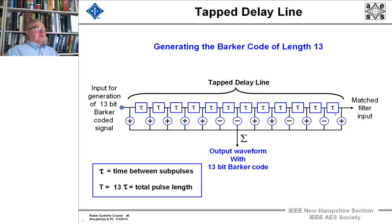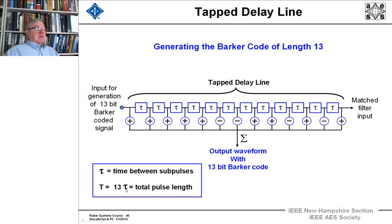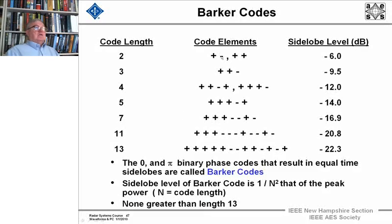If we have the general pulse here, the matched filter input comes here and the output waveform with the Barker code comes out here. The time between sub-pulses is tau, and so we have 13 dB extra in resolution. And here are all the Barker codes.